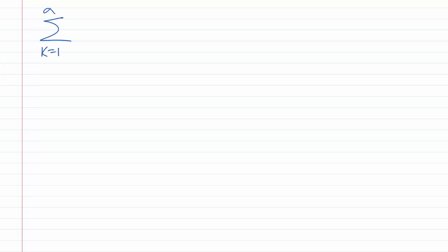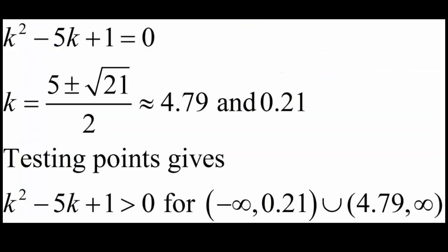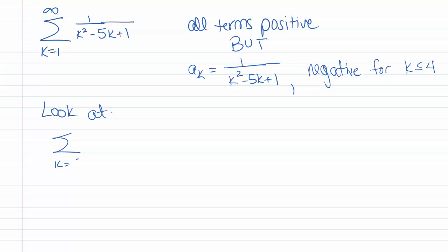Let's try one last example: the sum k goes from 1 to infinity of 1 over k squared minus 5k plus 1. We want to use the comparison test, but we need to be careful because the comparison test requires all terms to be positive. For a sub k equal to 1 over k squared minus 5k plus 1, this is actually negative for k less than or equal to 4. So we're going to look at the sum k goes from 5 to infinity. If we can show it converges from 5 on, adding a finite number of terms to the front won't change that.